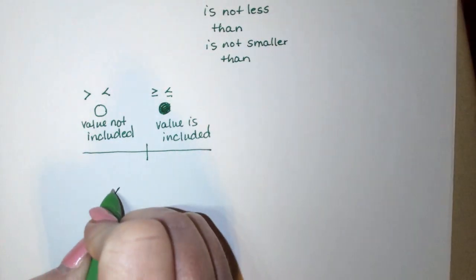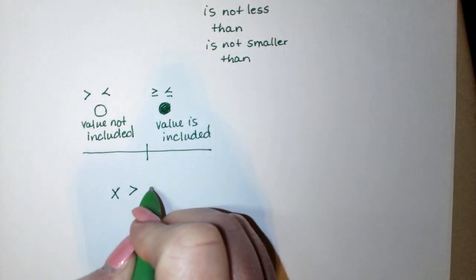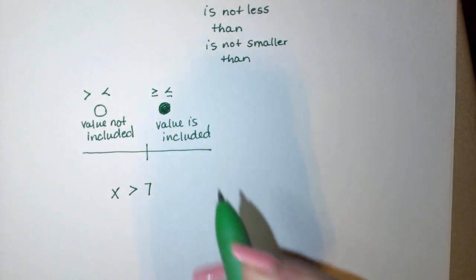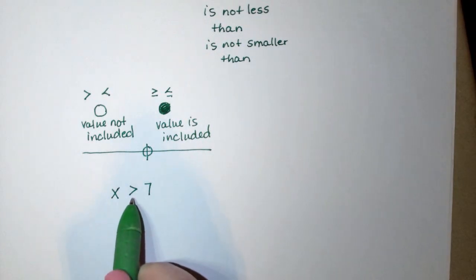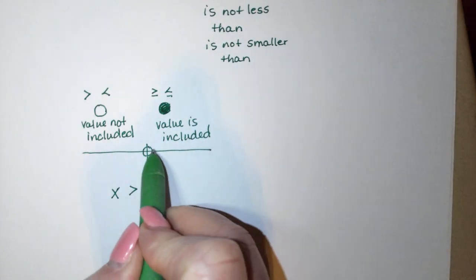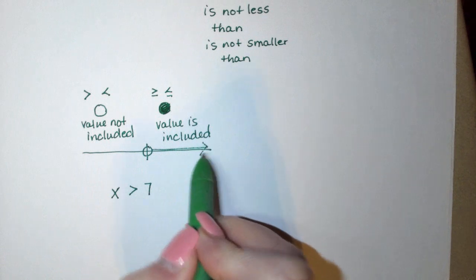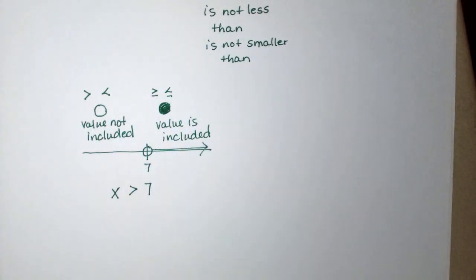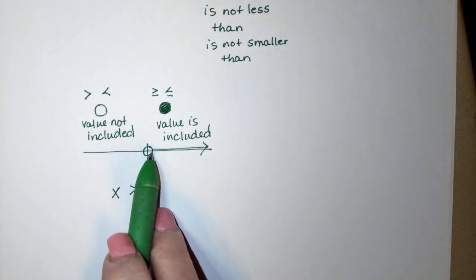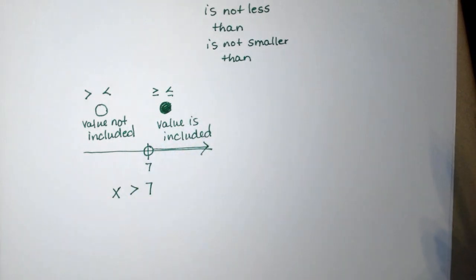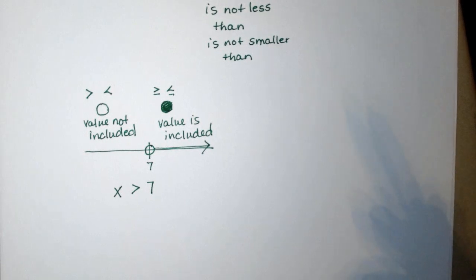Now, if my solution is x is greater than 7, I could graph it this way. I have an open dot because it's not included. My arrow is going greater, and I would put 7 on that number line. So x could be 7.1 or 100. x could be 900. As long as x is greater than 7, that is my solution set. So when I start solving those inequalities, I have to realize that I do the same thing as I do with solving equations.